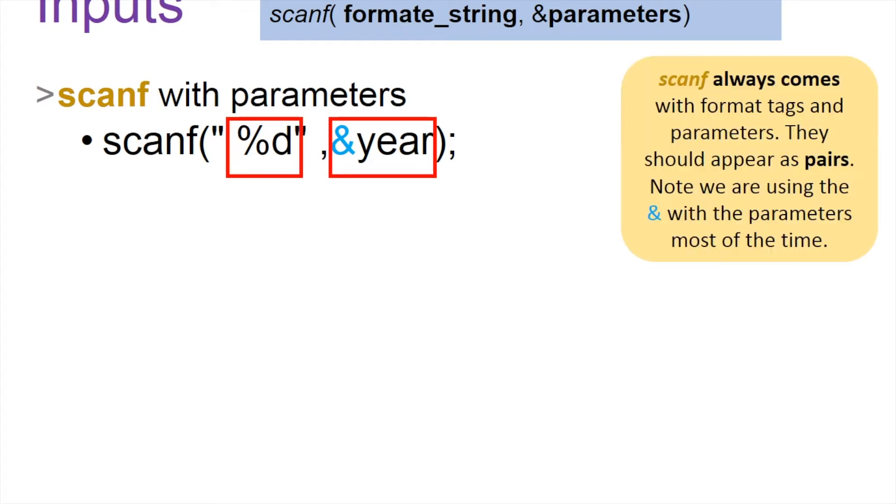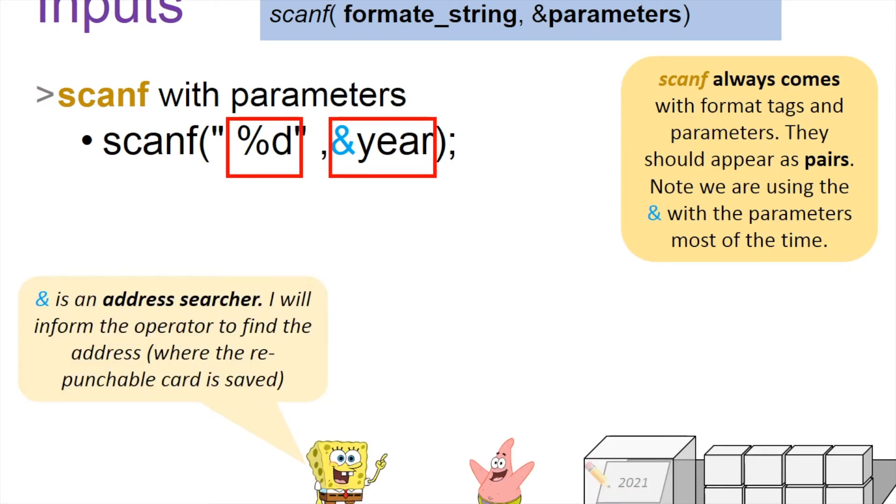But the ampersand character is very important here. It's like an address searcher which will help you find the address of a variable rather than use the name of the variable.